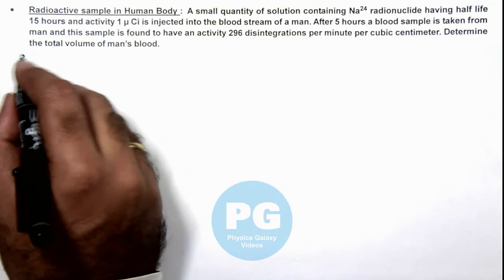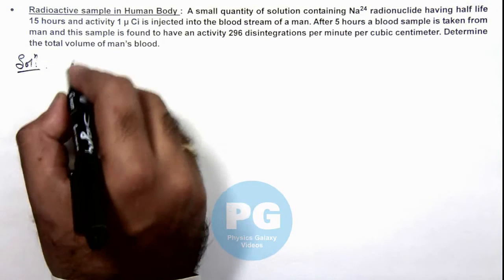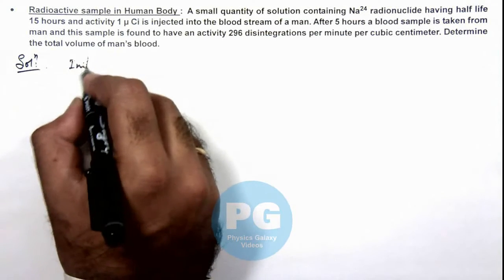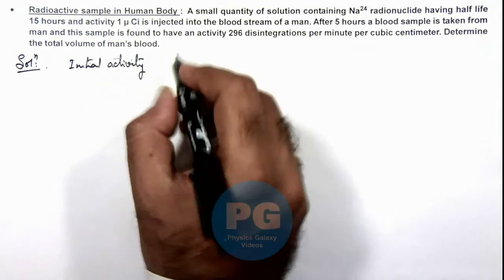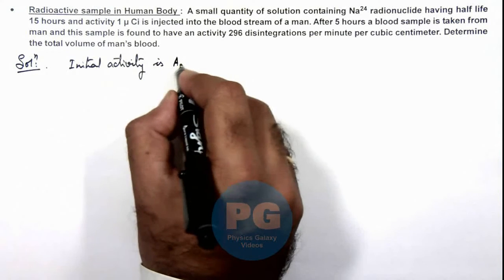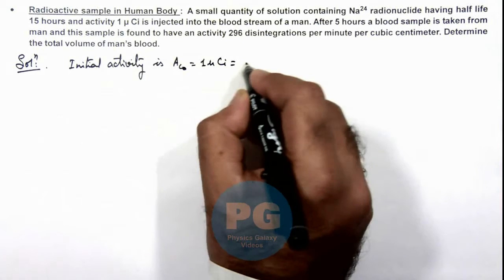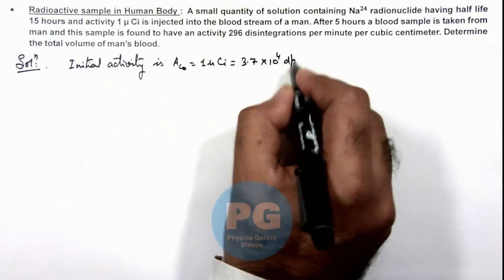So here we can calculate this situation. The initial activity given to us, activity not, we can write it as 1 microcurie which is 3.7 × 10⁴ disintegrations per second.